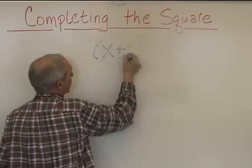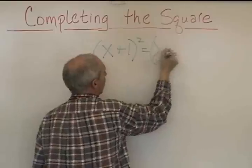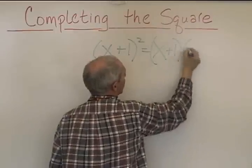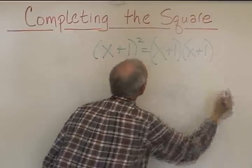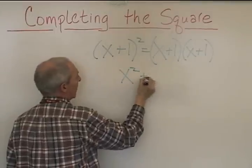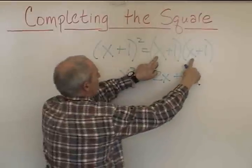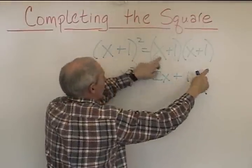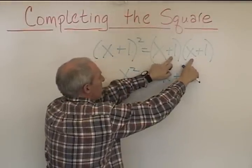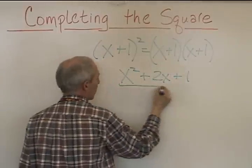x plus 1 all squared, which is equal to x plus 1 times x plus 1, is going to equal x squared plus 2x plus 1. x squared, 1x, another x, that's 2x, and then 1 squared. This is a perfect square trinomial.